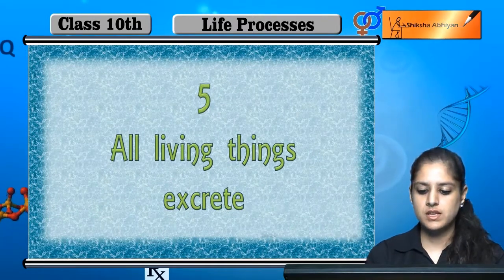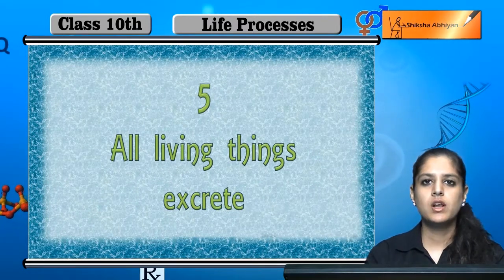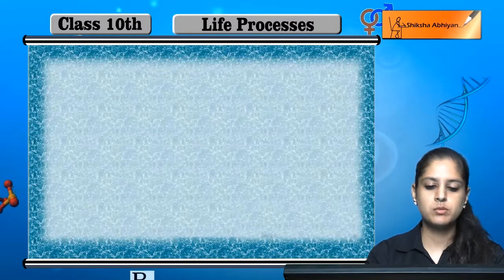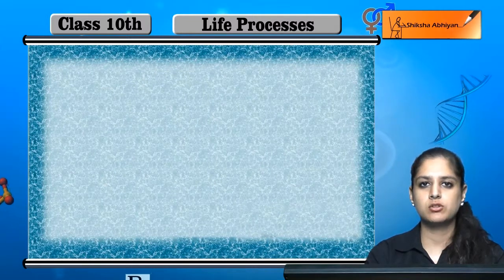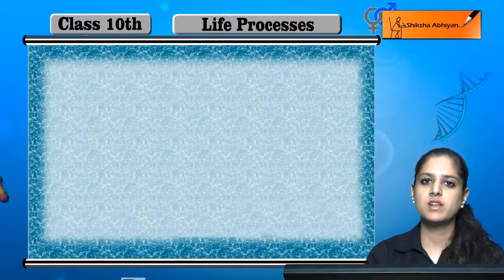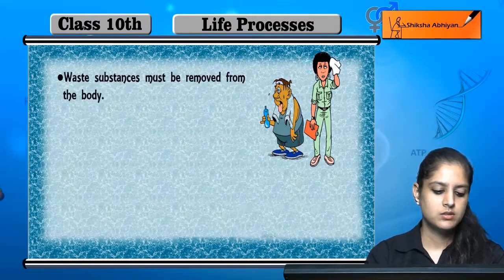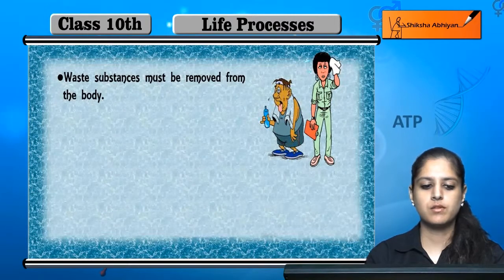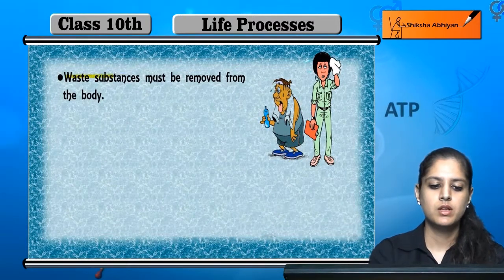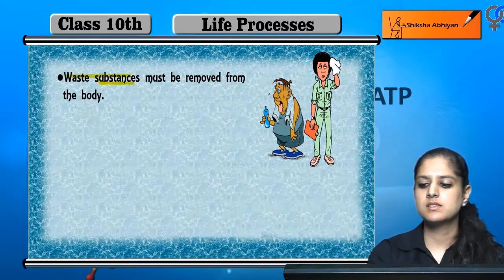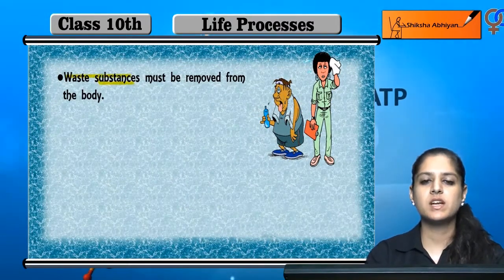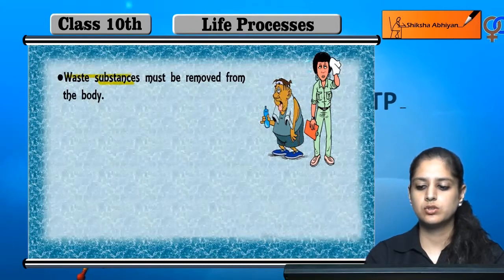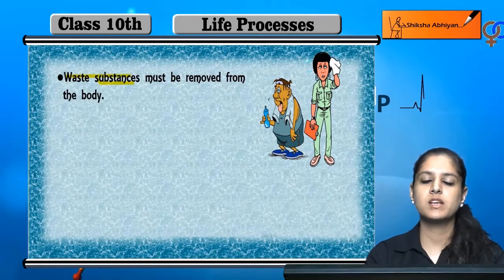The fifth process is that all living things excrete. Whatever waste material is in the body, every living thing removes it. For example, waste substances like sweat come out from our body.